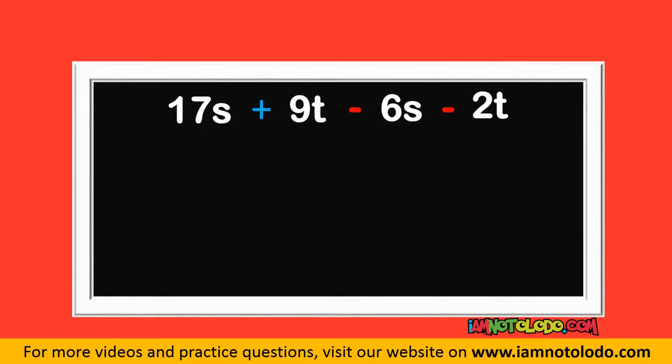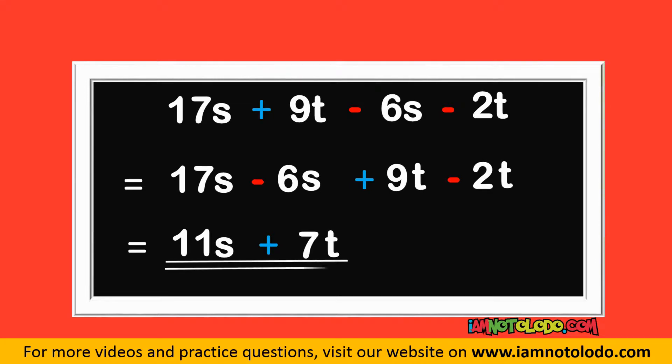Let's collect like terms. 17S minus 6S plus 9T minus 2T. 17 minus 6 is 11. Write down your S. Then this minus this is what? 9 minus 2 is plus 7. Write down your T. This is our final answer.